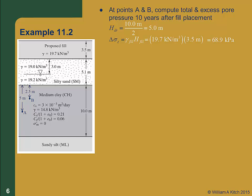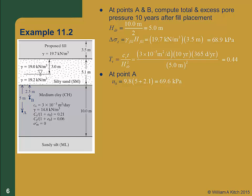We'll be using figure 11.4 to solve the problem, so we'll need dimensionless values for all our variables. First, we'll need the dimensionless time T sub v, which is C sub v times T over h_dr squared. We're given C sub v as 3 times 10 to the minus 3 meters squared per day; the time is 10 years, which we convert into days, and divide by h_dr squared, or 5 squared. The resulting time factor is 0.44. We'll compute the static pore pressure before consolidation simply as gamma water times the height of the groundwater table above A, which comes out to 69.6 kPa. To determine the excess pore pressure, we'll need our dimensionless depth z_dr over h_dr, or 5 over 5, which equals 1.